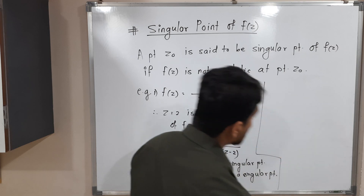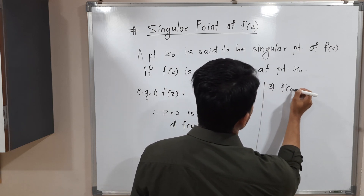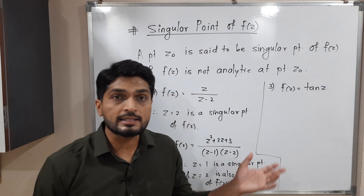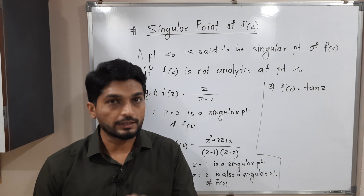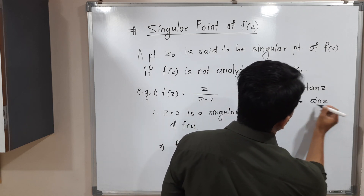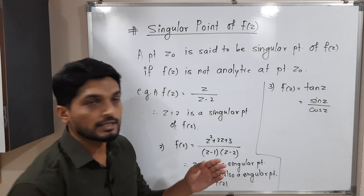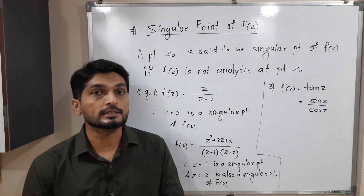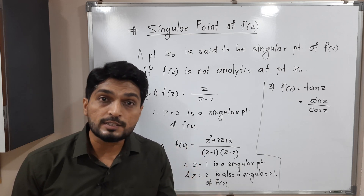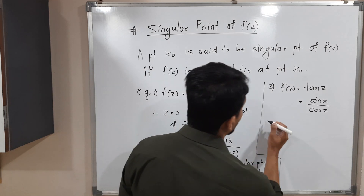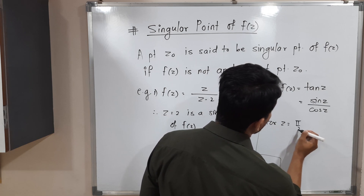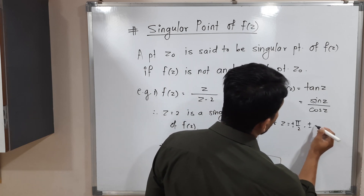The next example is f of z is equal to tan z. We have to find its singular points. Maybe you will think that tan z has no denominator — but tan z can be expressed as sin z upon cos z. So the denominator is cos z. For what values of z will cos z be 0? For z is equal to plus minus pi by 2, plus minus 3 pi by 2, plus minus 5 pi by 2, and so on.